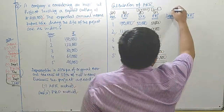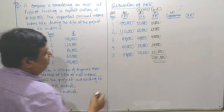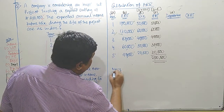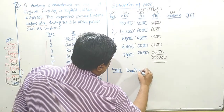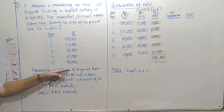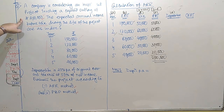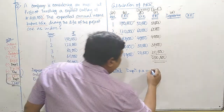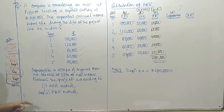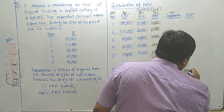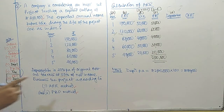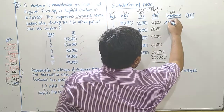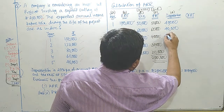This is column E. To calculate depreciation, we follow a note: depreciation is 20 percent per annum of original cost, as mentioned in the question. The original cost is 2 lakhs. So it is 2 lakhs into 20 percent, giving a figure of 40,000 rupees per annum. We plot 40,000 as depreciation for each and every year.